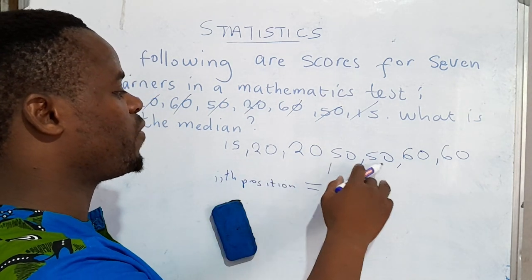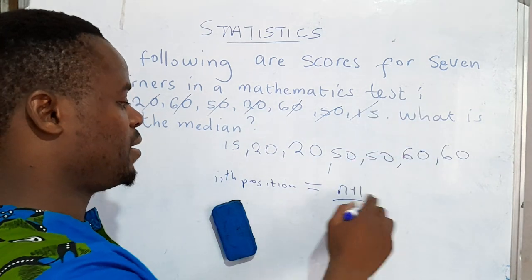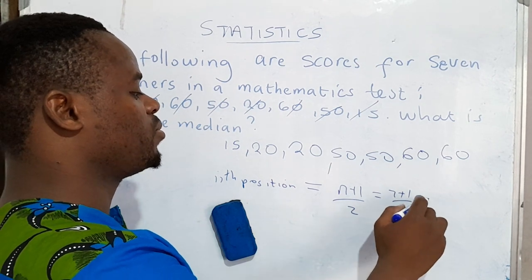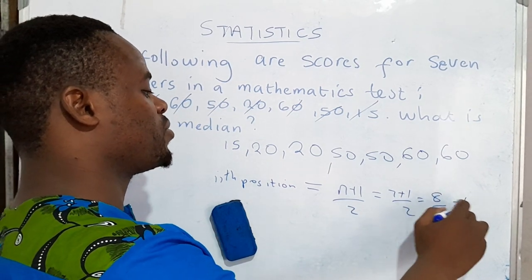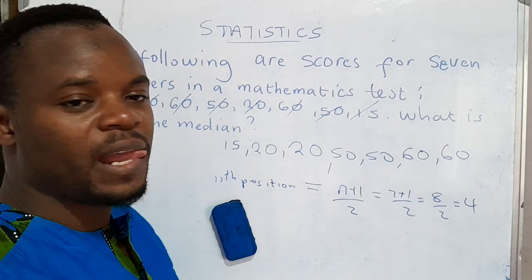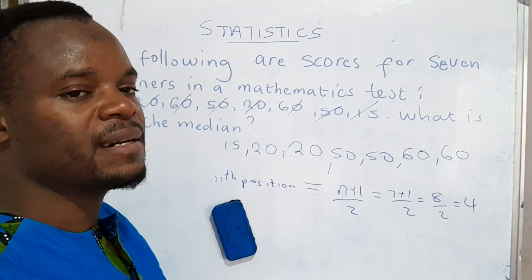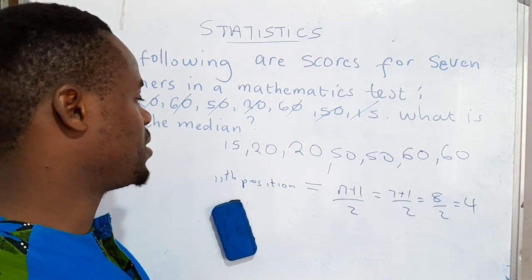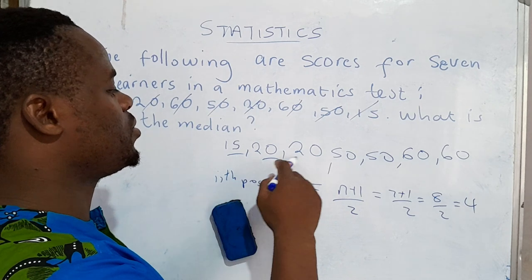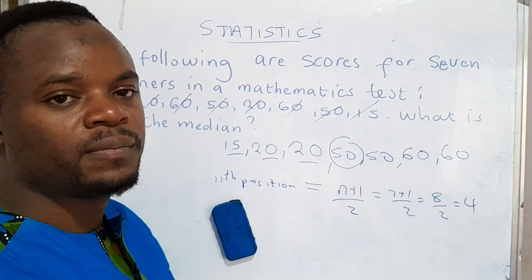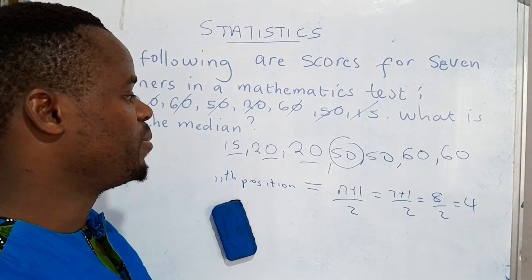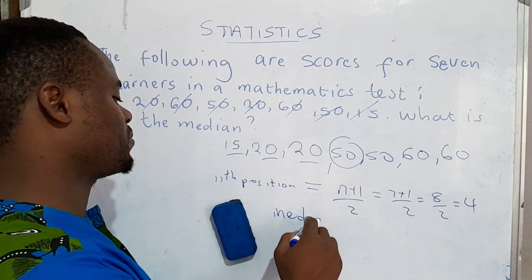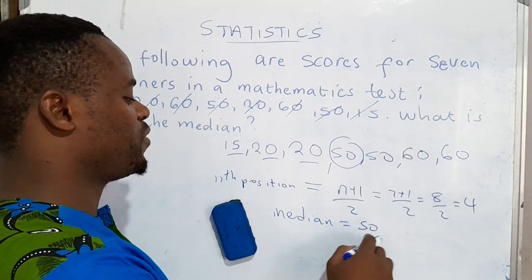Counting the terms: 1, 2, 3, 4, 5, 6, 7. So we're going to have 7 plus 1 over 2, which is equal to 8 over 2, which is equal to 4. So the median — the number in the middle of all these numbers — is in the fourth position. Count: 1, 2, 3, 4. That is the number which is in the middle. So that's a 50. The median is equal to 50.